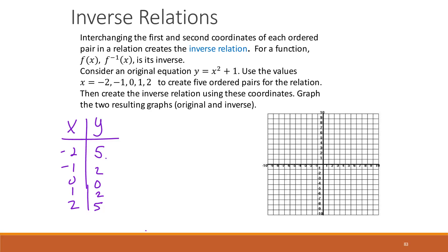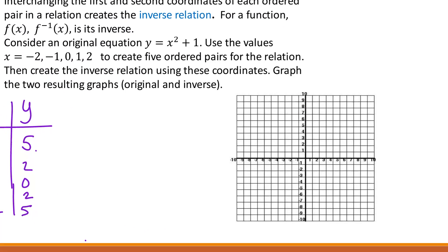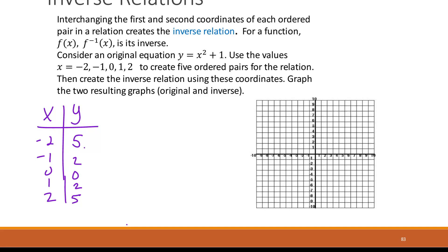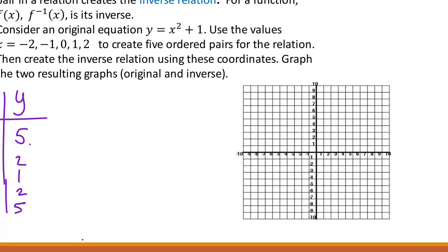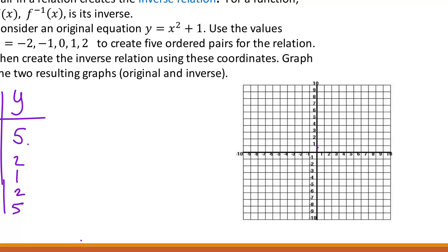If I were to graph the original function, we would have a point at (0, 1), a point at (1, 2) and (-1, 2), and then points at (2, 5) and (-2, 5). And so this is the original function.